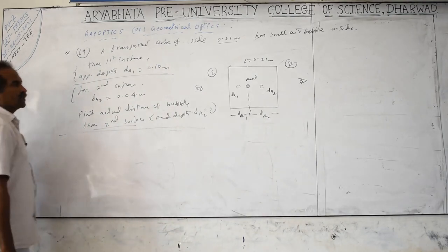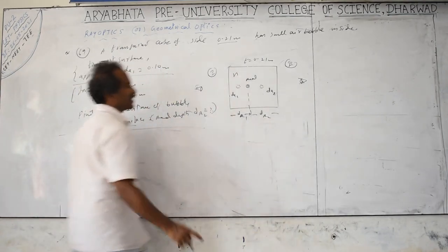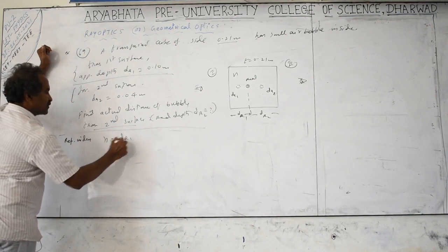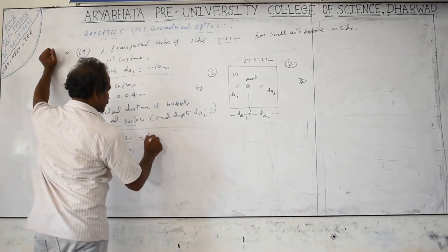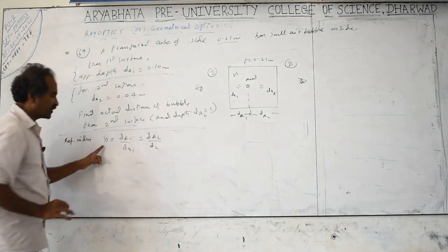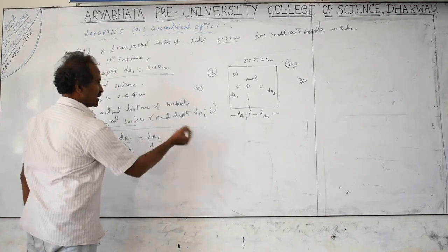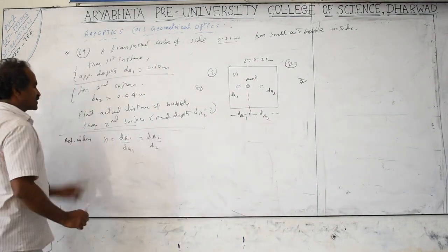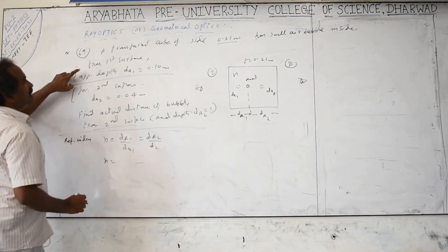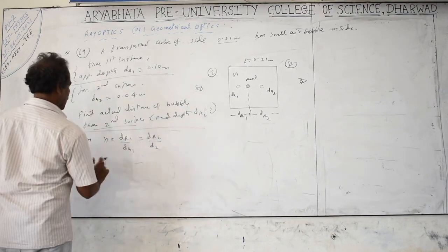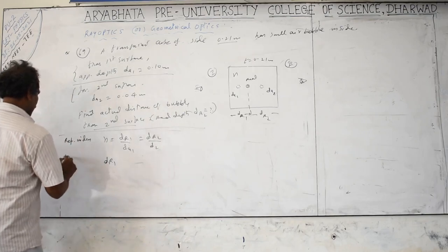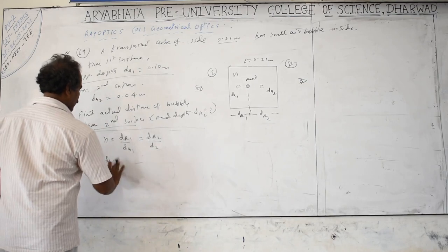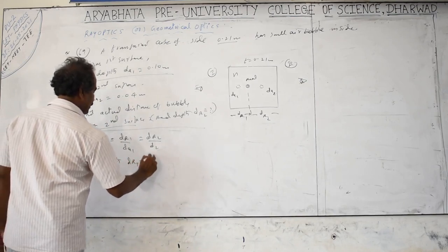The observer is in air. The formula is n equals real depth divided by apparent depth. From the first surface: n equals d_R1 divided by d_A1. We have d_R1 = n × d_A1 and d_R2 = n × d_A2. Since d_R1 plus d_R2 equals 0.21, we substitute: n × d_A1 plus n × d_A2 equals 0.21.